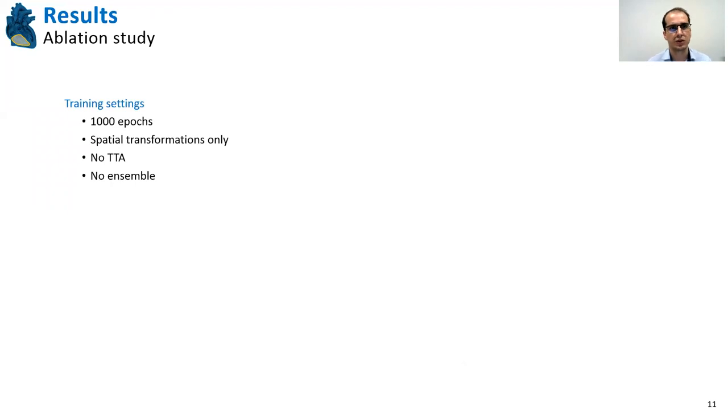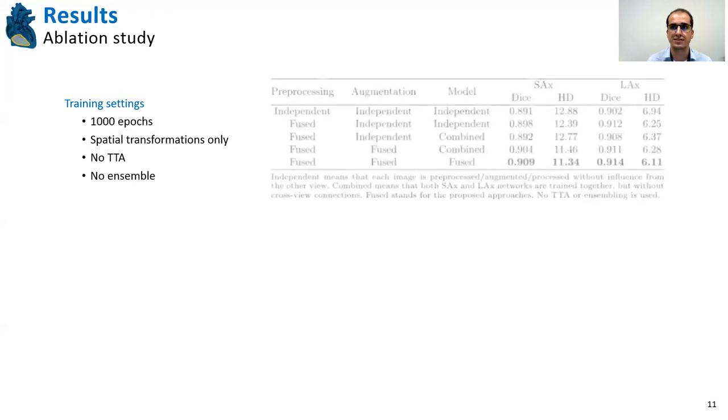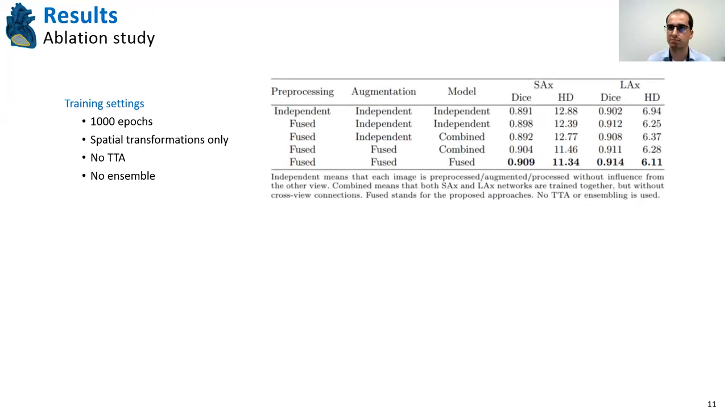We started with an ablation study in which I fixed some of the training settings, like 1000 epochs and spatial transformations only without test time augmentation or ensemble. And from the baseline models, which are independent U-Net models, I started adding each one of the core proposed modules. So the fused preprocessing, fused augmentation and fused model, and these led to incremental improvements of the segmentation metrics.